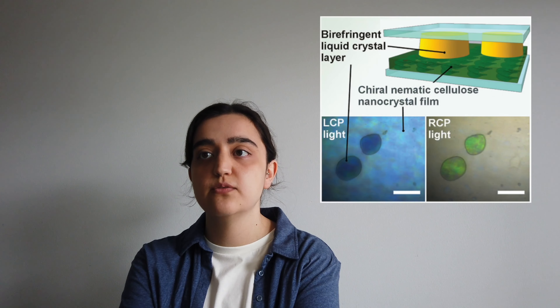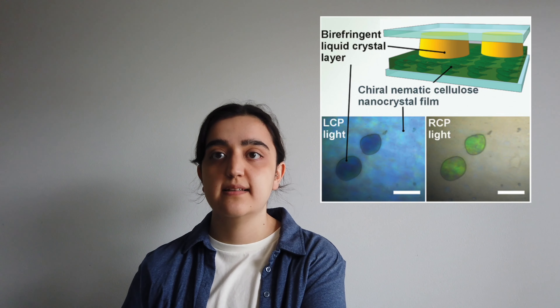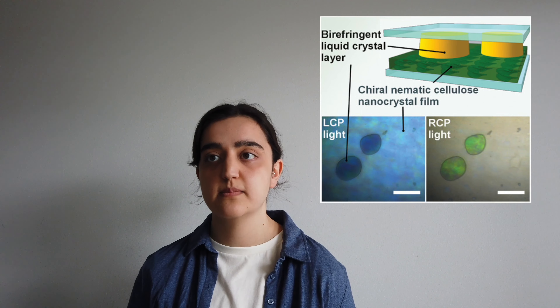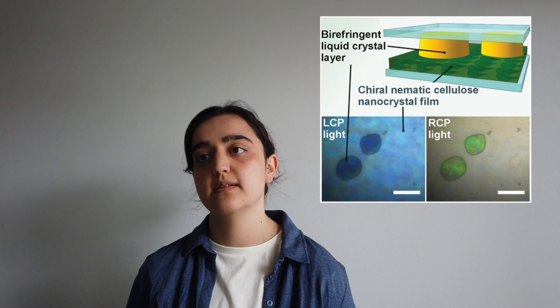And with polarization, it is possible to get different information from the same biological sample. For example, like in this cellulose example. They use different polarized light to image the cellulose and get different information from the same sample.